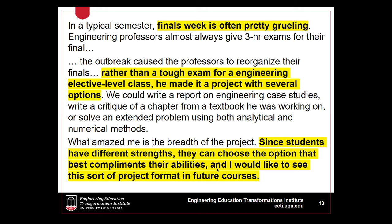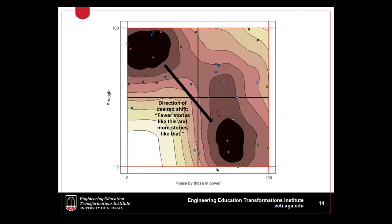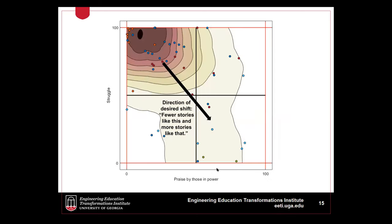What about the fall? Unfortunately, we saw a startling shift towards more stories of struggle and less praise by those in power. Here is that same heat map from the fall, created using MATLAB — we can clearly see two concentrations of stories have now clustered around much higher struggle and low praise by those in power. What changed? One explanation is that the University System of Georgia mandated in-person learning through a hybrid teaching model, which undermined both faculty and student agency in how they wished to engage in instructional activities. These and other findings from our spring and fall data are available in four reports published as part of our RAPID grant.